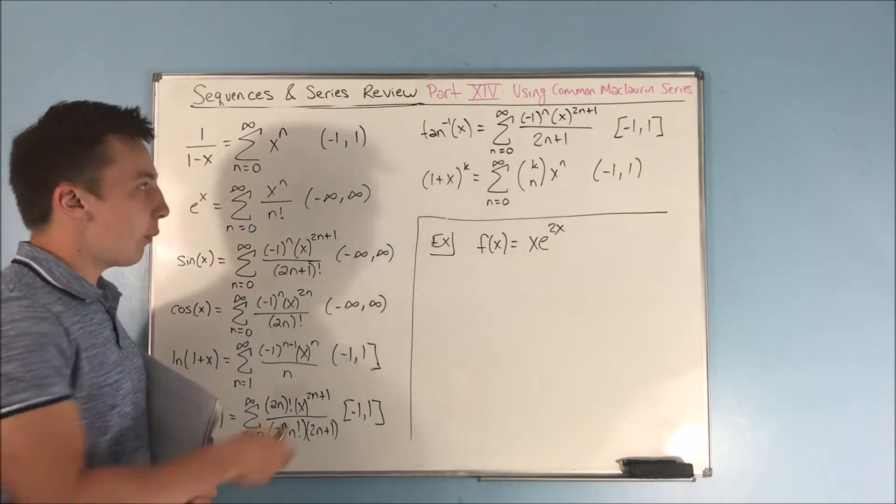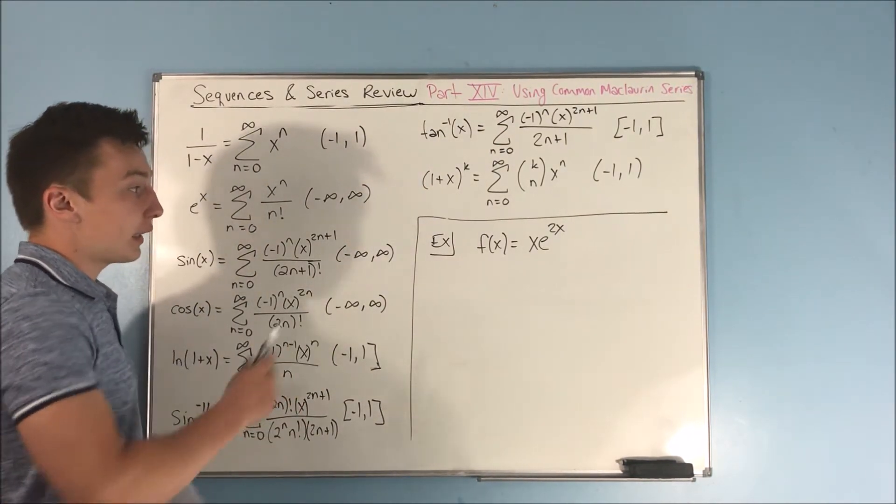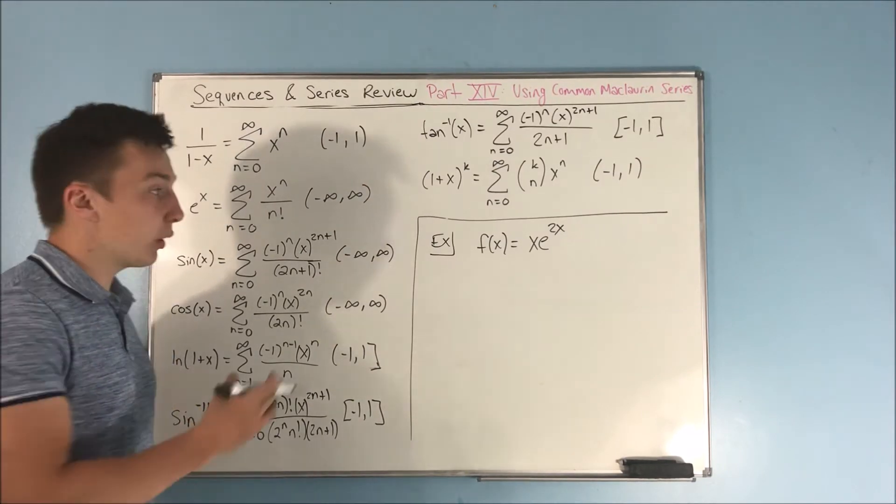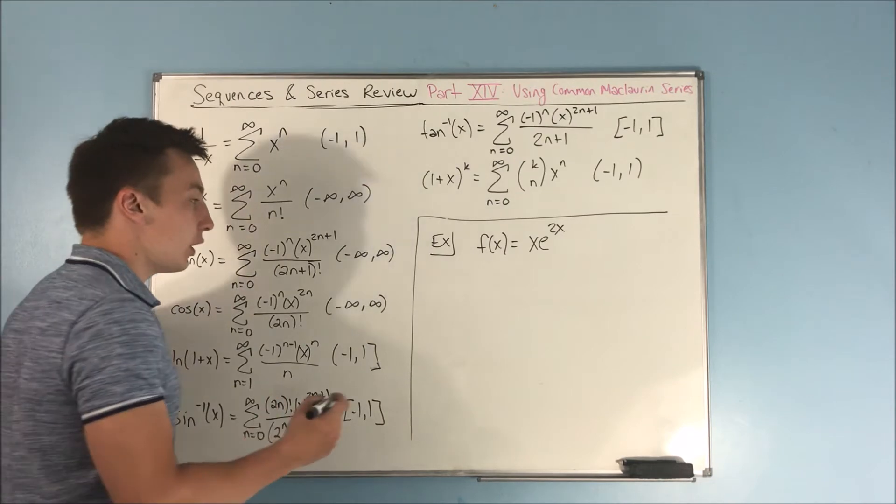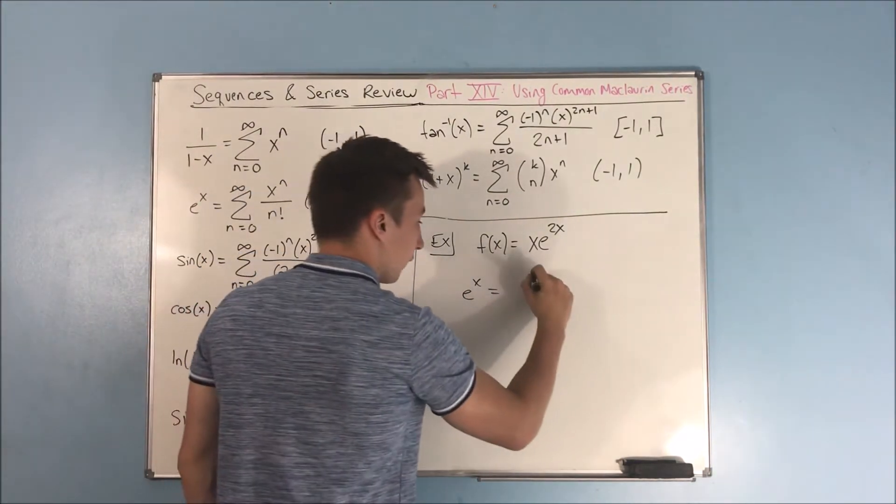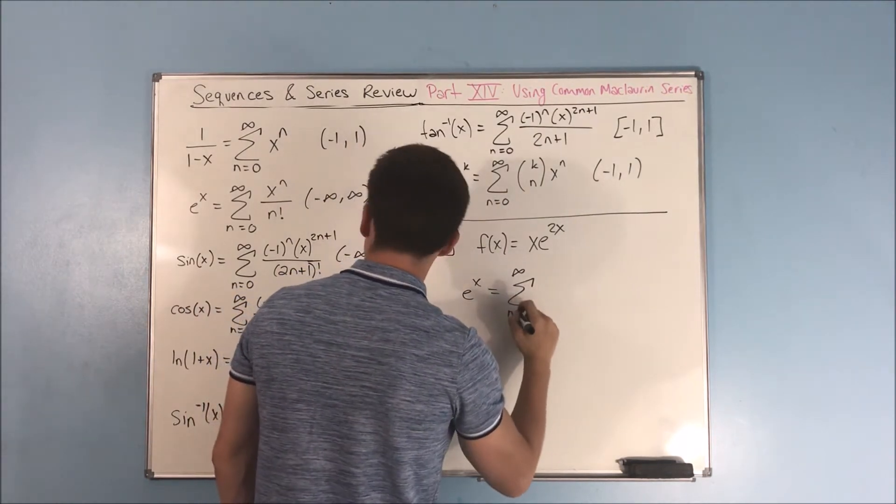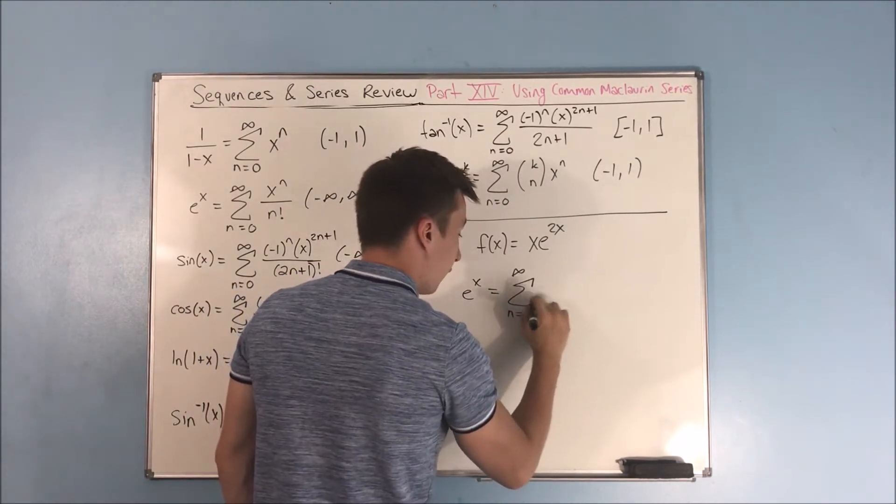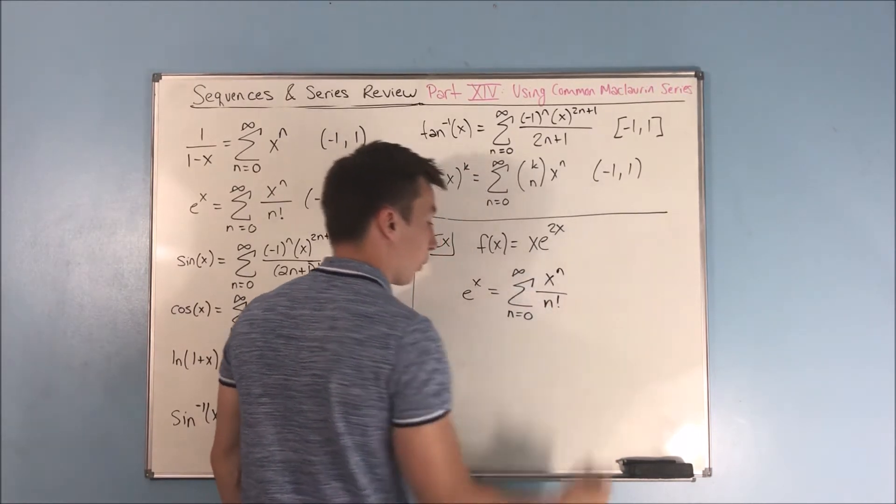Okay, so here's how we can use these. If we have the function xe to the 2x, we want to find a Maclaurin series representation for that function. Well, what we can do is we can start off from e to the x. And e to the x, as we have over here,